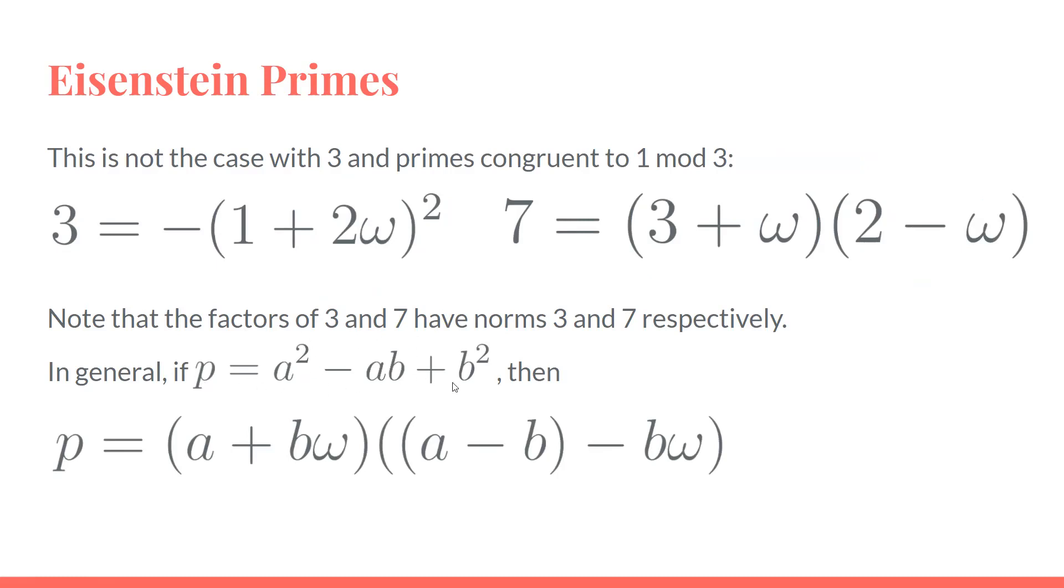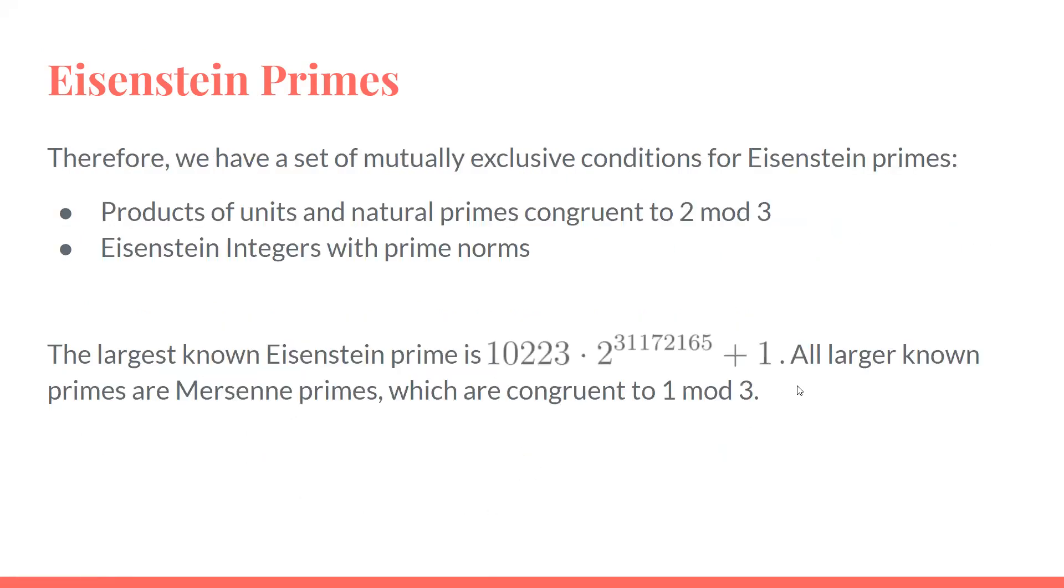So in general, prime numbers that can be written in this form will factor in this particular way, where these two things actually do end up being primes themselves. We end up with two criteria for Eisenstein primes: either regular primes congruent to 2 mod 3, and sort of everything that can be multiplied with a unit, or Eisenstein integers with prime norms.